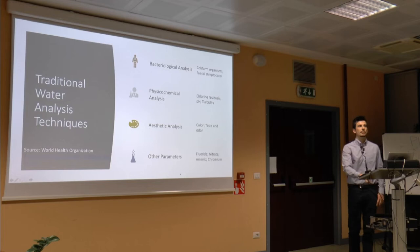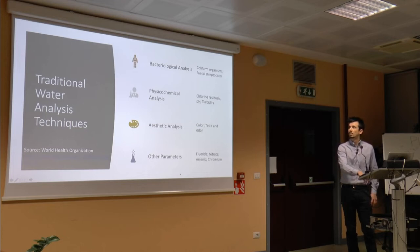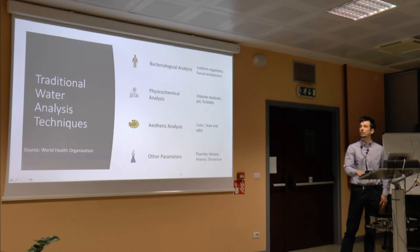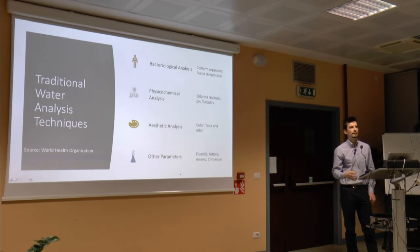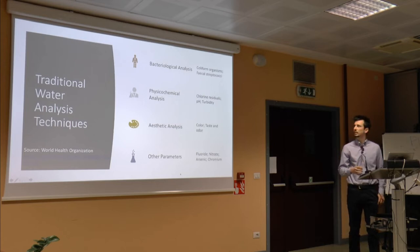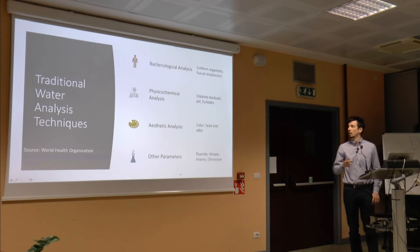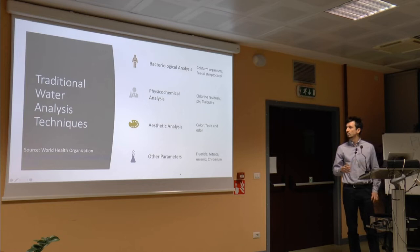Now I will move the focus to cases where water service and water infrastructure already exist, and how cities or countries provide and guarantee such a service. Periodically — yearly or even monthly in some cases — at different points of the distribution infrastructure, water is sampled and transported to specialized laboratories to perform bacteriological analysis, physiochemical analysis including chlorine residuals, pH and turbidity, aesthetic analysis including color, taste and odor, and other parameters like fluoride, nitrate, arsenic, chromium and other dissolved minerals.